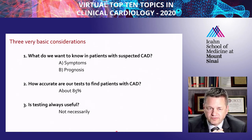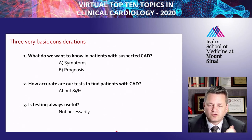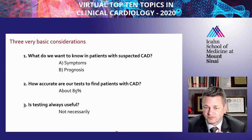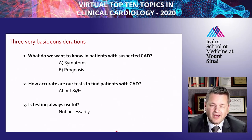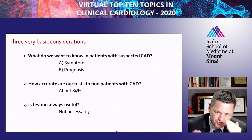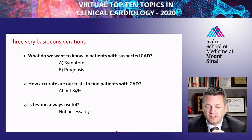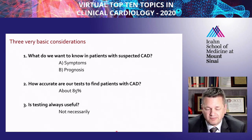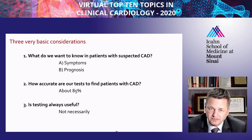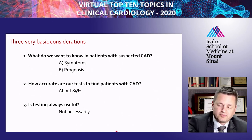So the three very basic considerations: what do we want to know in patients with suspected coronary artery disease? We want to know about whether symptoms are caused by coronary artery disease and how the prognosis of the patient is. How accurate are our tests? In general, approximately 85%. And is testing always useful? Not necessarily — in very low and very high pretest likelihood situations, performing a test might potentially give us a worse estimation of the patient's true likelihood of having disease than if no test had been performed.